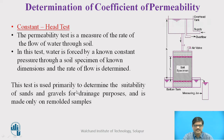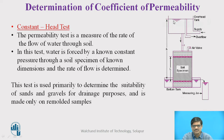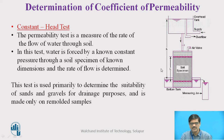Now let us come to the laboratory method, focusing on the first one — the constant head test. In this particular method, we make the water forcefully travel through the soil under a known constant pressure. As you can see on the right hand side, there is a setup where we have a constant head bath where the water level is maintained constant, then we have a soil sample, and the water is allowed to flow through this soil for a specific period of time, and whatever flow takes place is collected in the measuring jar. This test is used primarily to determine the suitability of sand and gravels for drainage purposes and is conducted only on remolded soil, making it very useful for coarse grain soil.